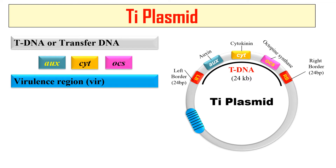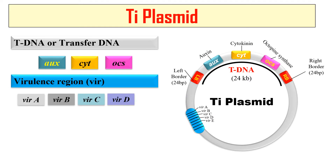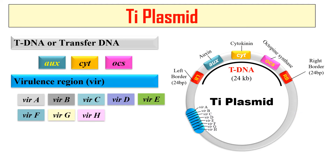The next element present in this Ti Plasmid is the virulence region. This virulence region consists of eight operons from vir A to vir H — that is vir A, B, C, D, E, F, G, and H. This virulence region helps the transfer of T-DNA to the plant. Only T-DNA will be transferred to the plant, but it requires the help of this virulence region, from vir A to vir H.